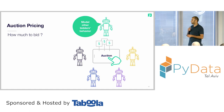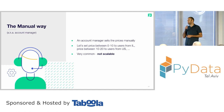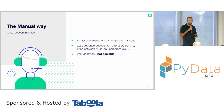Now we'll describe some approaches for pricing used in this industry. The first is the manual way — also known as the account manager way — where an account manager sets prices manually. For example, set prices 0 to 10 for users from Israel, prices 10 to 20 for users from the US, etc. This is very common in the industry, but not scalable at all — not the data-driven way.